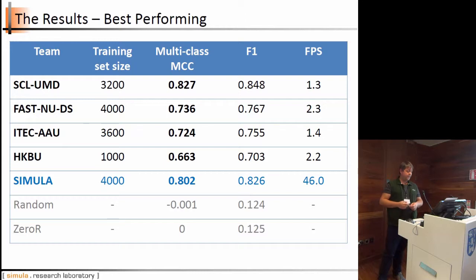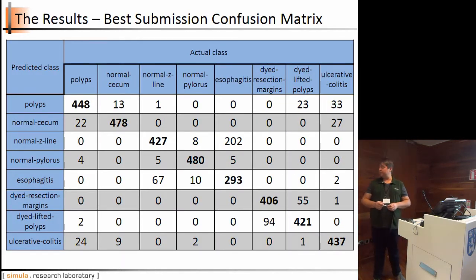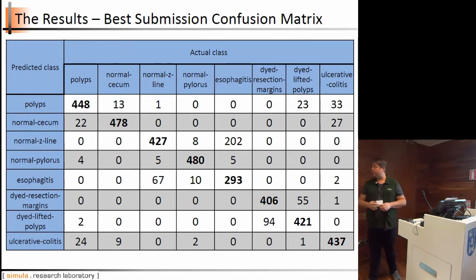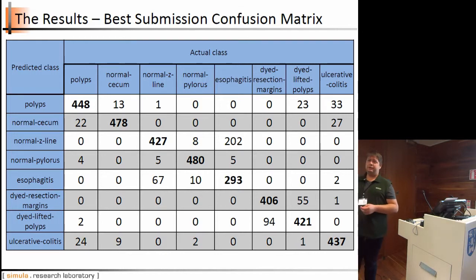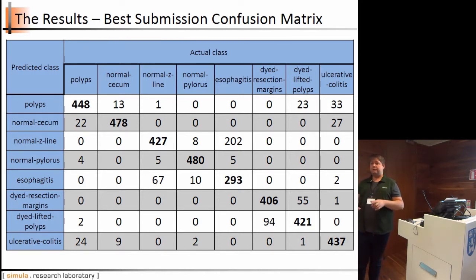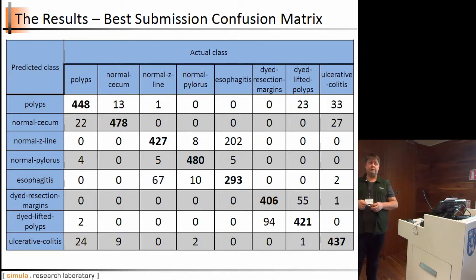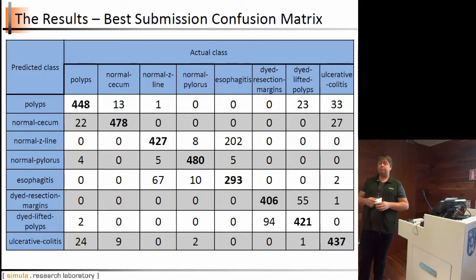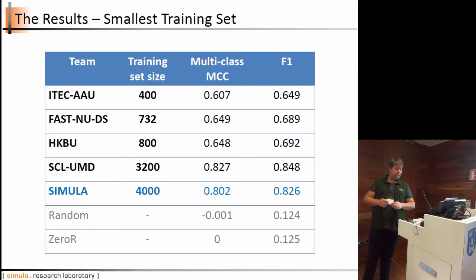This is the confusion matrix for the best submission. Almost all classes are classified correctly, except for some misclassification between normal Z-line and Barrett's esophagus — basically because Barrett's is an inflamed Z-line, so they're the same part of the gastrointestinal tract. Similarly, dyed resection margins and dyed lifted polyps are confused because they share the same color properties — colored tissue with a blue column.